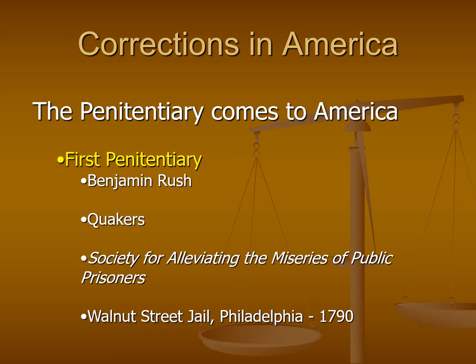The Quakers' religious views and ideals felt that in order to have somebody properly be healed and go through the process of punishment, they were big believers in concepts like penance and quiet self-reflection, quiet self-contemplation. They believed that those ideas should be part of the correctional system. Now in Philadelphia, Pennsylvania, in the late 1700s, the Quakers formed a particular group called the Society for Alleviating the Miseries of Public Prisoners.